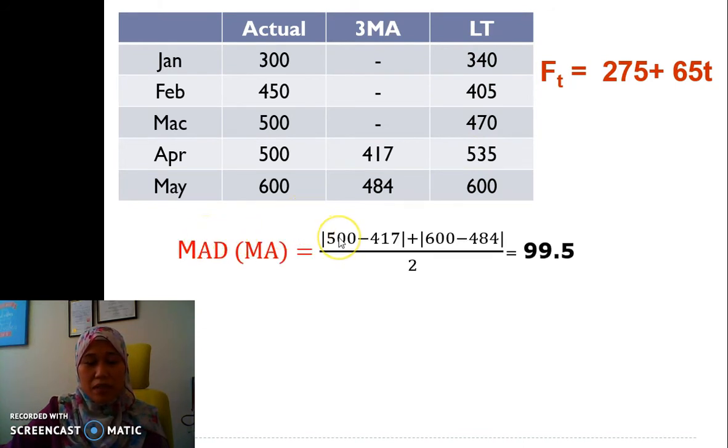The next step is to find the MAD. The formula of MAD is the absolute deviation, the absolute error. It means the actual minus the forecast plus actual minus forecast, in which we need absolute deviation here. So divide by 2, since there's only 2 error measurements here, so we get 99.5.